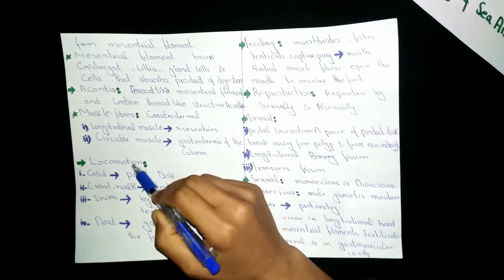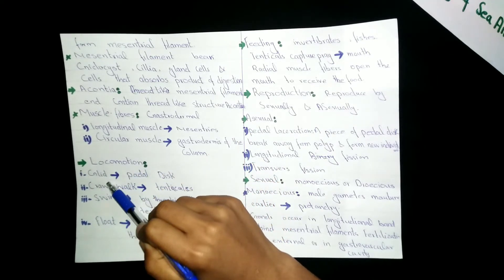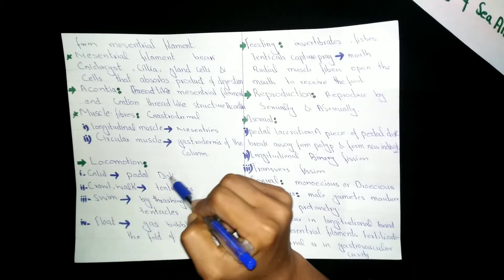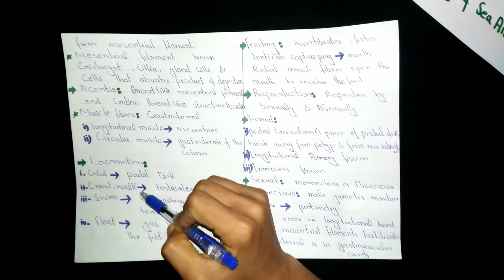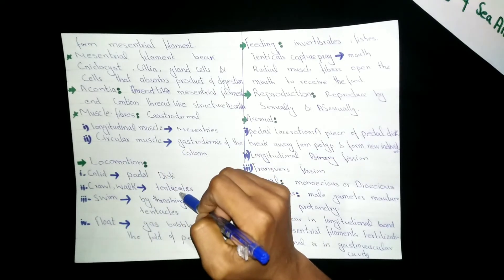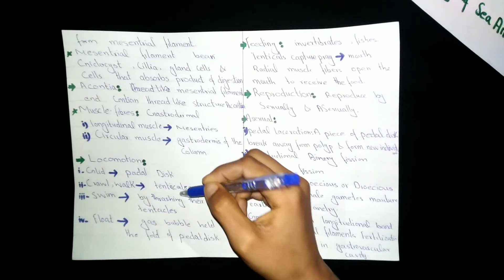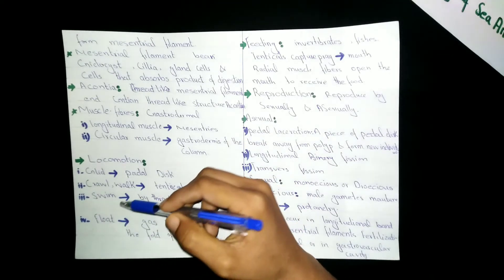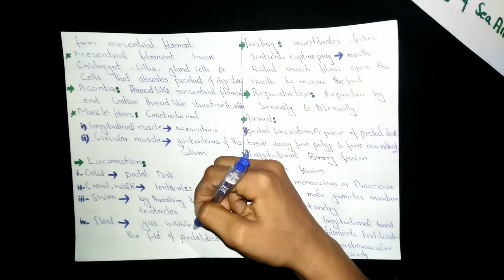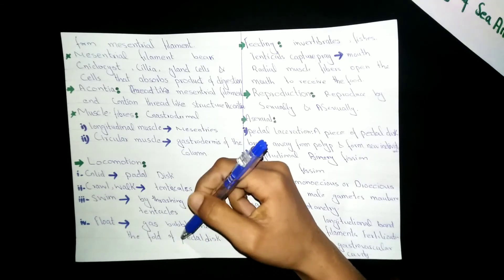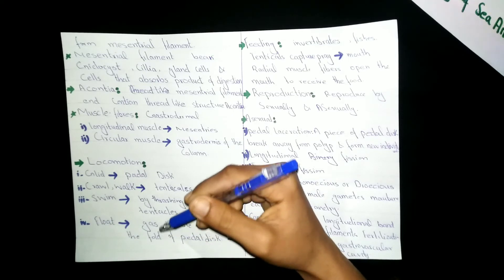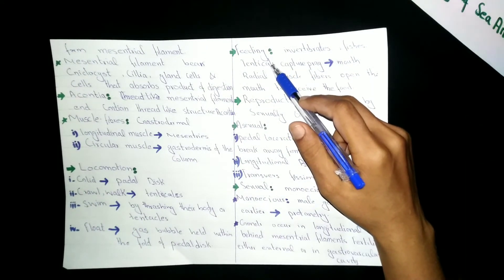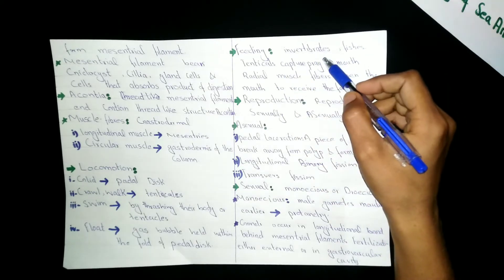Next is locomotion. Sea anemones move in different ways: gliding — moving from one place to another on the pedal disc; crawling or walking; using tentacles; swimming; and floating.